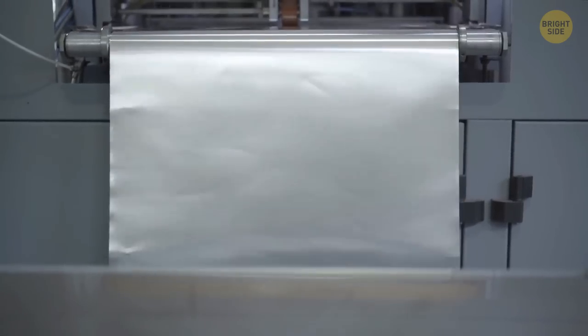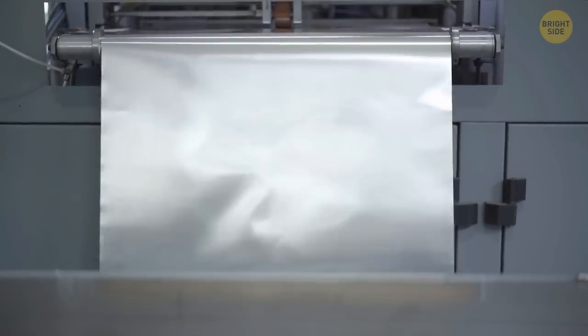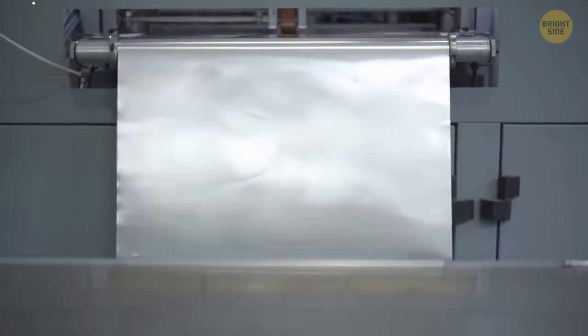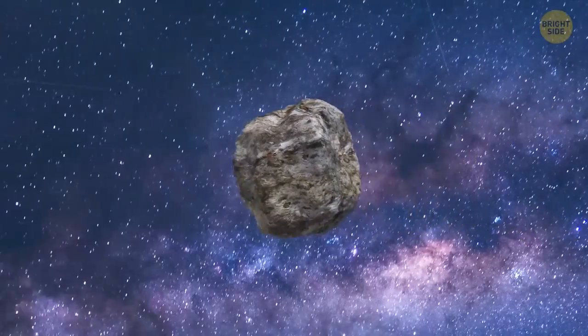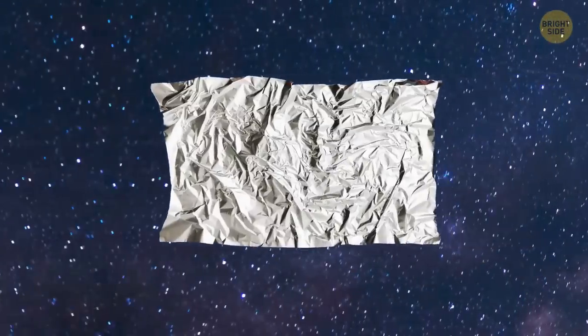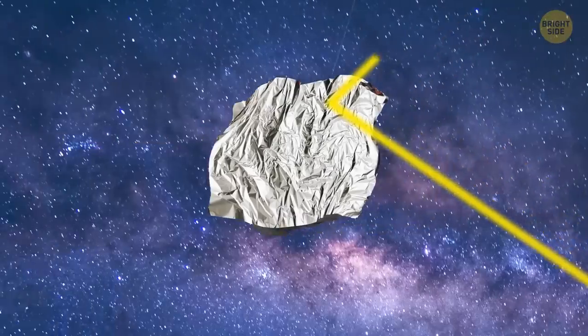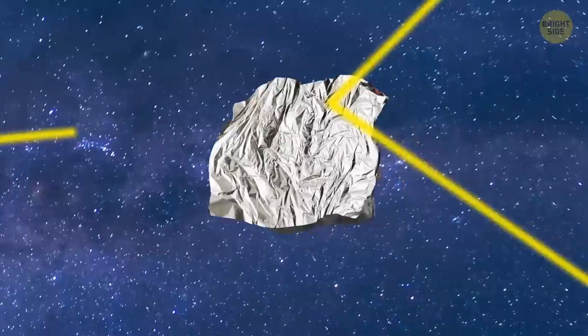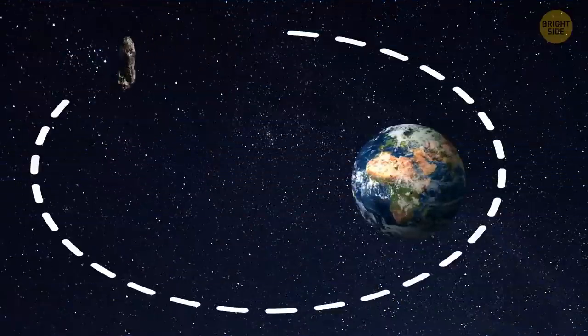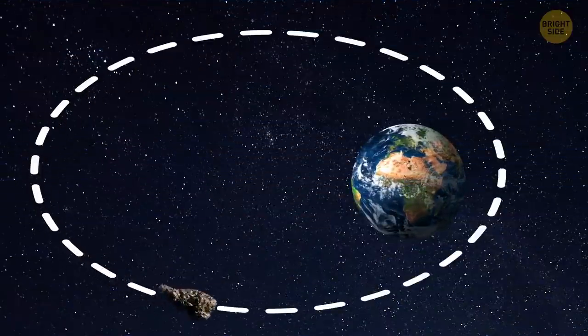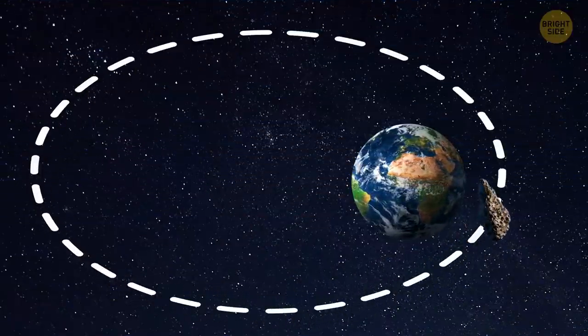How about foil? That's right. We can avoid a collision with an asteroid by using ordinary foil. We would have to wrap the asteroid in the same reflective material. Then the asteroid won't absorb the sun's rays, but will instead reflect them. This creates a little pressure on the surface of the asteroid. It's as if the sun's rays are pushing the asteroid, and it'll be able to change its trajectory.